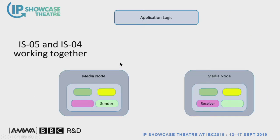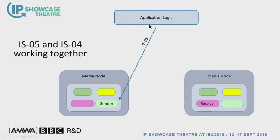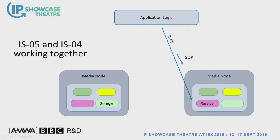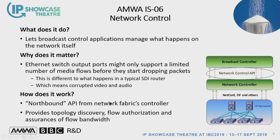IS-04 and IS-05 working together: imagine a camera and an IP monitor — they will both register themselves with the IS-04 registry. The control application will send an IS-05 message to the sending node. In the case of 2110, it will get the SDP information — the session description protocol — that describes what it's sending and information about the network endpoints. It will send that to the receiver, and then the receiver will do a multicast subscribe, and the connection will be made. That can be a 2110 RTP stream, but it doesn't have to be.